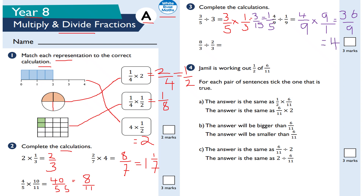This next one: 8 thirds divided by 2 thirds. Keep the first fraction — KFC: keep, flip, change. The 2 thirds goes to 3 halves, so you flip that. Change the division to a multiplication. Working this out, I get 24 sixths, which simplifies to the whole number 4.